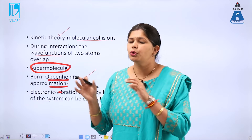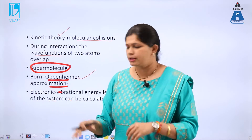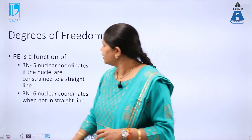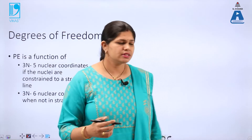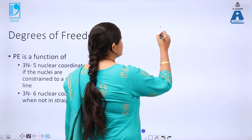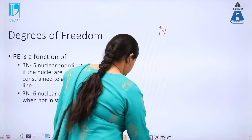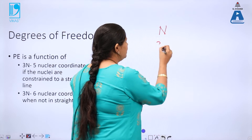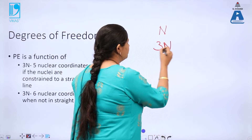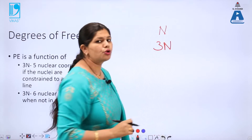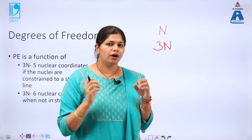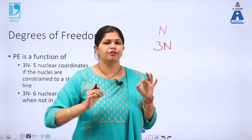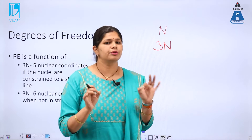After understanding this, let us understand what the degrees of freedom are. Suppose I have a molecule consisting of n atoms. There are 3n total number of coordinates in which it can move, or 3n total degrees of freedom that it can possess.